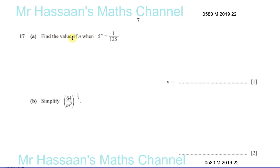Now we have question 17, page number 6 of questions from February/March 2019, paper 2, variant 2. We've got the first question on this page, number 17, which is about indices.